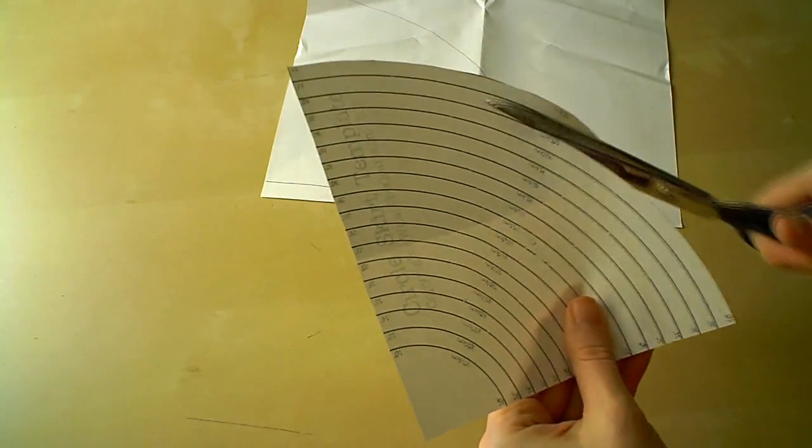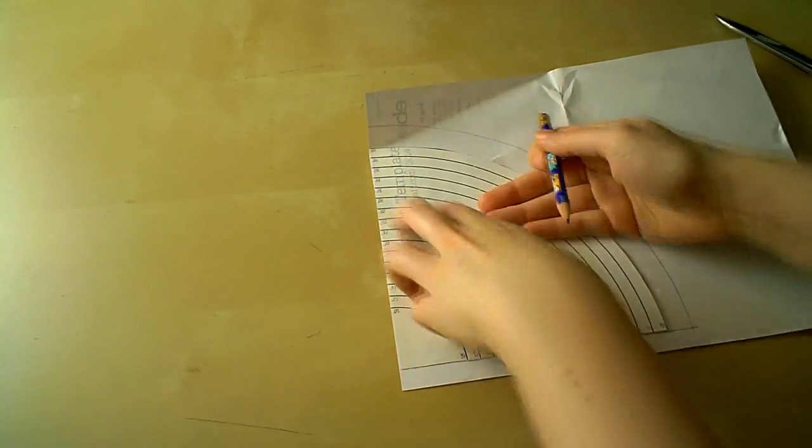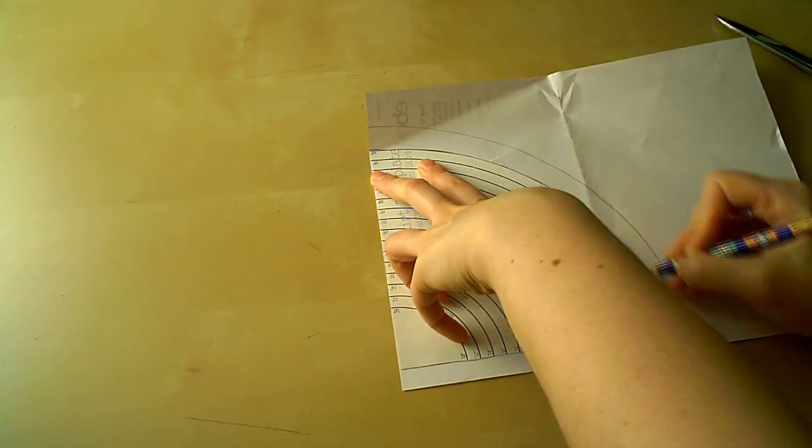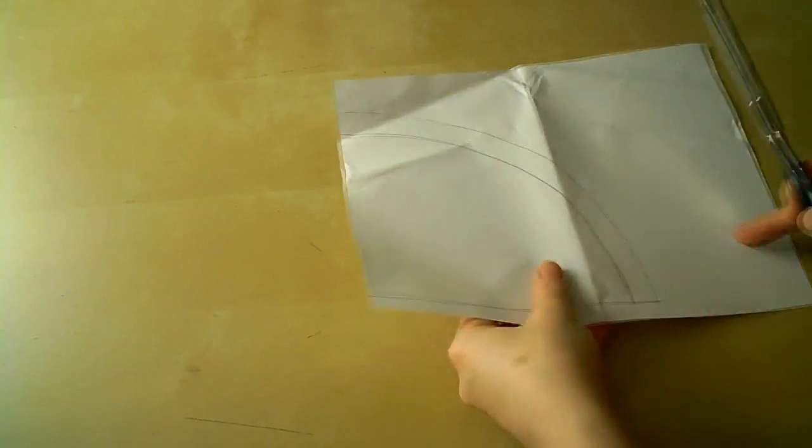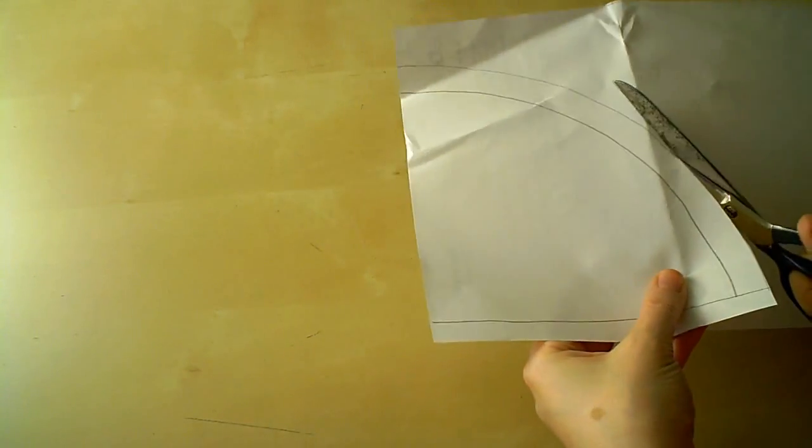Now we're going to cut around the 40 inch guideline on the template. Line up the template with what you traced before and trace around the new edge. What we've just traced is the pattern for the cone part of the hat. Go ahead and cut that out.